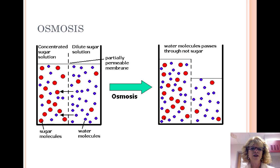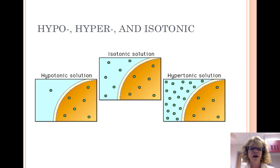The side with the lower concentration is called hypotonic. The side with the higher concentration is called hypertonic. So water moves from hypotonic to hypertonic across a selectively permeable membrane. Water will continue to cross the membrane until the concentrations are equal on both sides. The type of solute isn't important, only the total concentration of solutes.